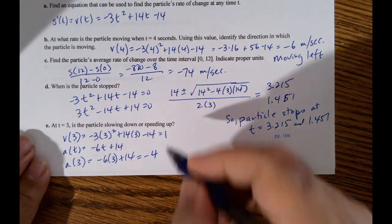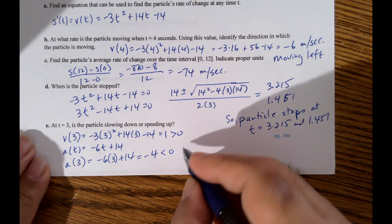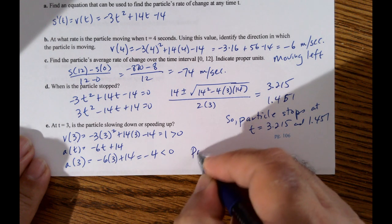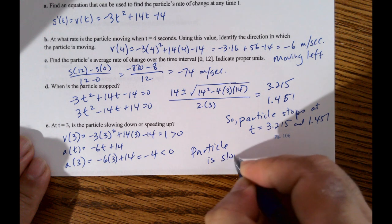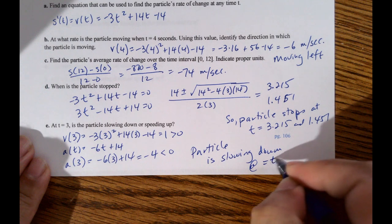So this is positive. The velocity is positive, but the acceleration is negative. So when they're working against each other, the particle is slowing down. Particle is slowing down. So at t equals 3.